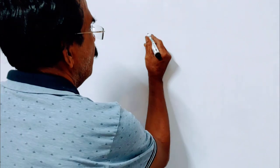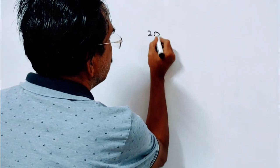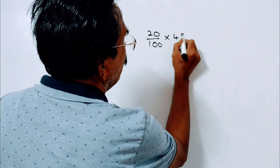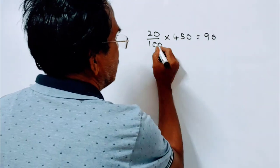Friends, here the price is reduced by 20%. What is 20% of 450? 90 rupees, friends.